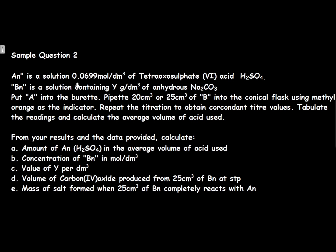It says: AN is a solution of 0.0699 mole per dm³ of tetraoxosulfuric acid. So this is the concentration of the acid. Take note, when you see mole per dm³, it tells you it is the concentration because this is the unit of concentration. And B is a solution containing Y grams per dm³ of anhydrous sodium tetraoxocarbonate IV. Take note, the mass in grams is not given to us yet, so we'll be asked to look for it. Put A into the burette. Prepare 25 cm³ of B into the conical flask using methyl orange as the indicator. Repeat the titration to obtain concordant titrate values. Tabulate the readings and calculate the average volume of acid used.